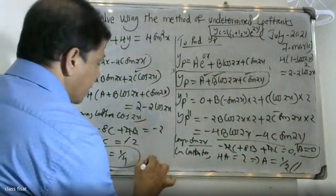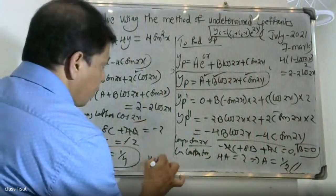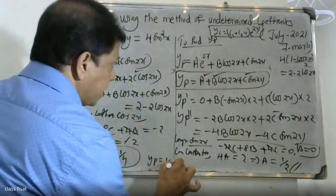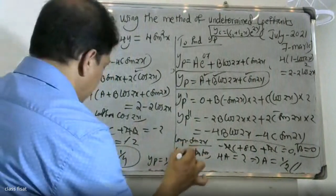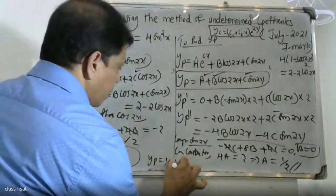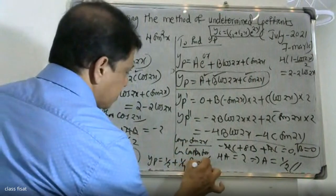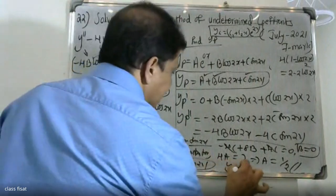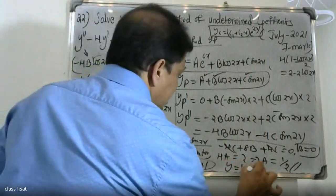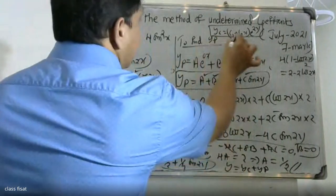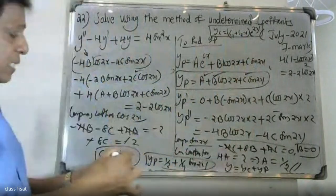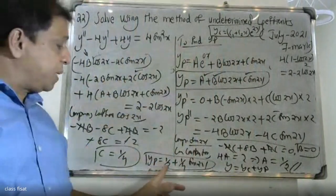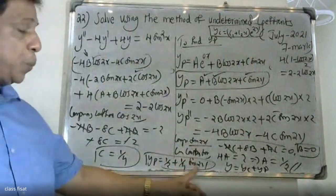Therefore yp = A + B·cos2x + C·sin2x = 1/2 + 0 + (1/4)sin2x. The general solution is y = yc + yp, where yc = (c1 + c2·x)·e^(2x) and yp = 1/2 + (1/4)sin2x.